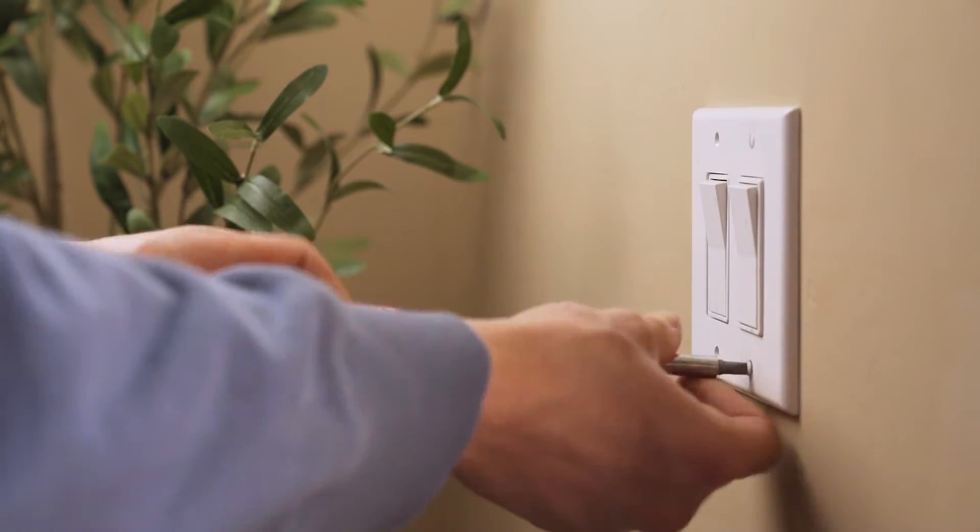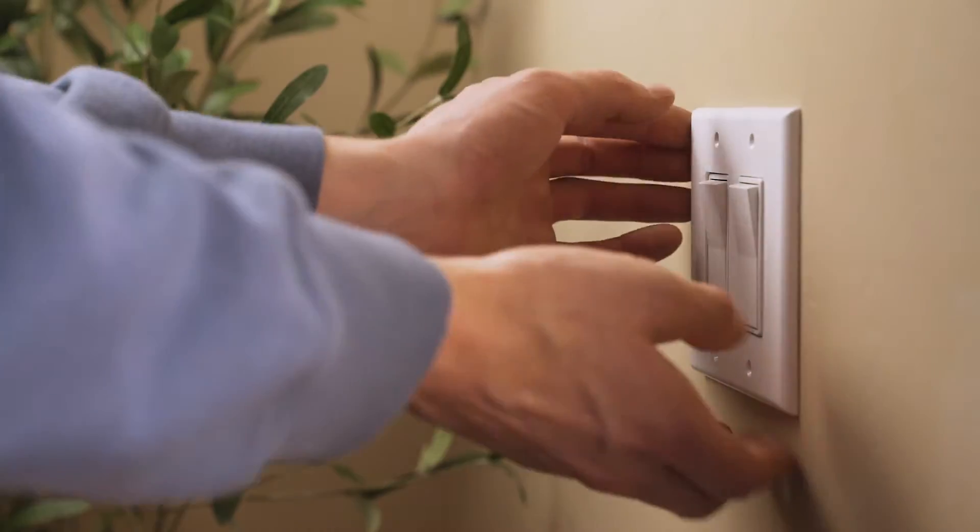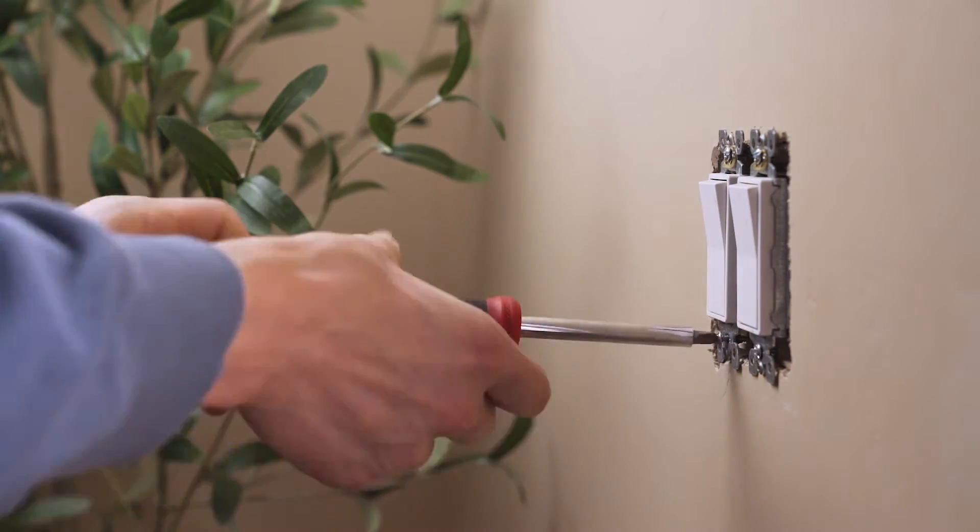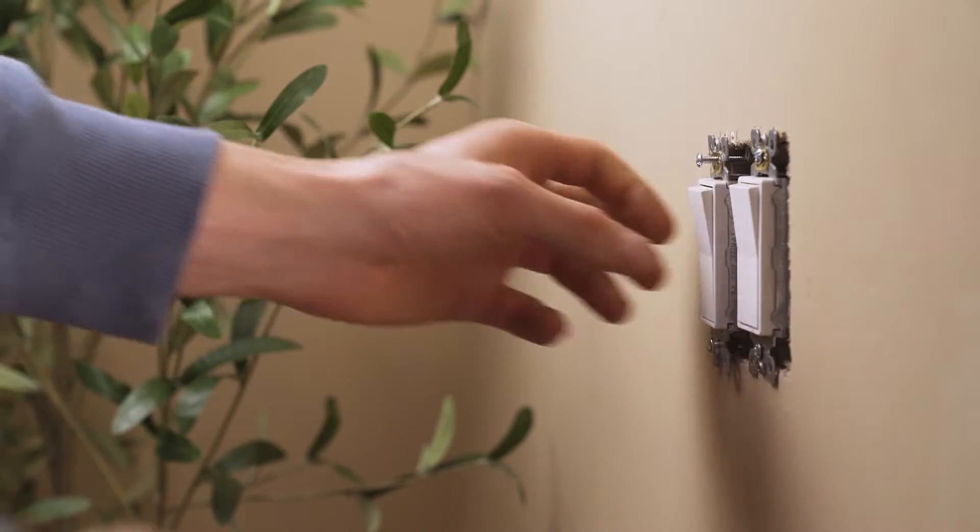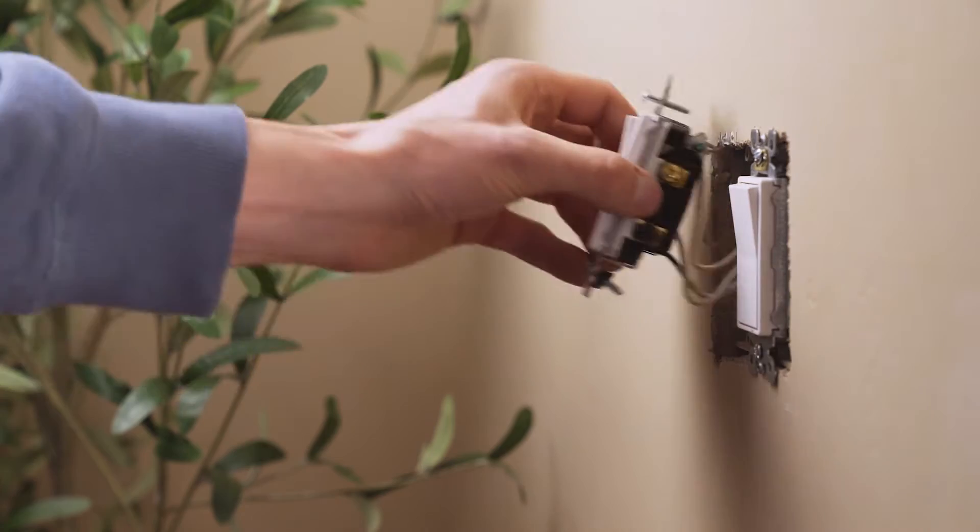Remove the face plate from the original light switch. Once removed, unscrew the original light switch to access the wires in the back of it.